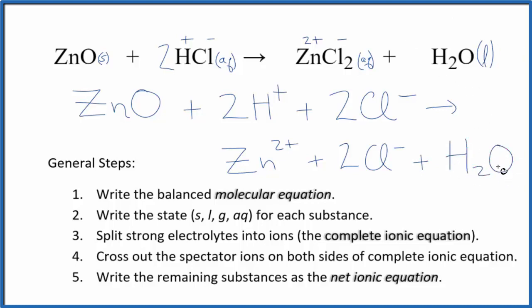Now we can cross the spectator ions out. They're on both sides of the complete ionic equation. The only thing that's the same in the reactants and the products are these two chloride ions right here. Since these are the same we can cross these out and that'll give us the net ionic equation.